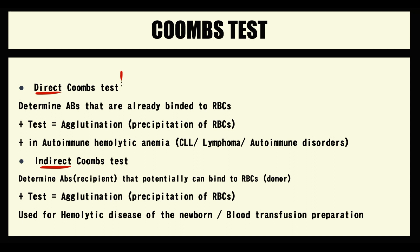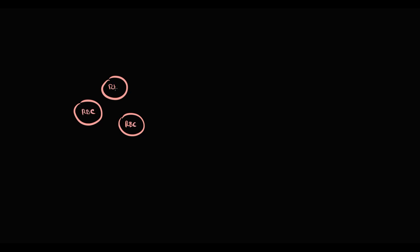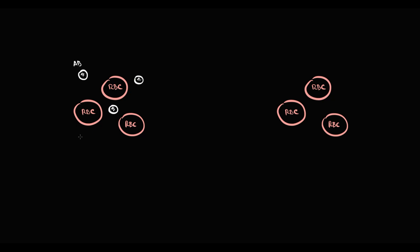In direct Coombs tests, we determine antibodies that are already bound to the surface of red blood cells. To explain this, here we have a normal blood sample — there are some red blood cells and also some antibodies that are circulating in the bloodstream. And here we have a second blood sample. There are also some red blood cells, but the major difference is that some of the antibodies, due to an autoimmune reaction, are bound to red blood cells, which is quite dangerous because such red blood cells will be destroyed in the spleen.